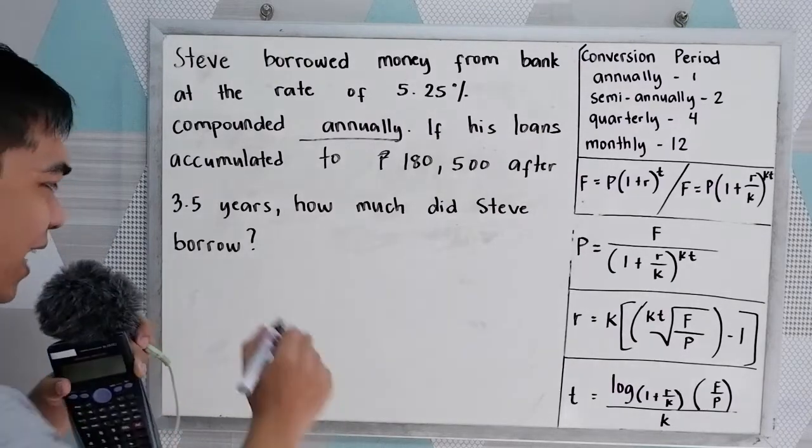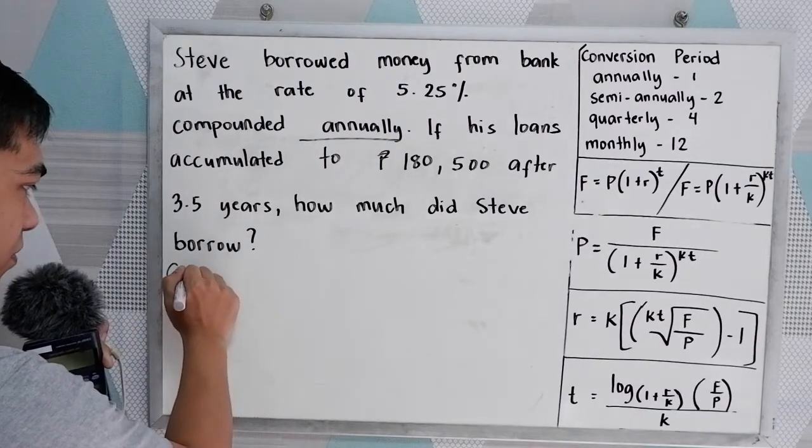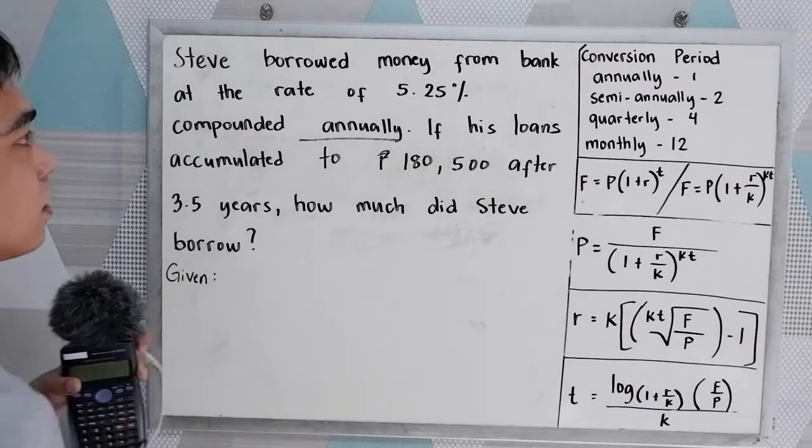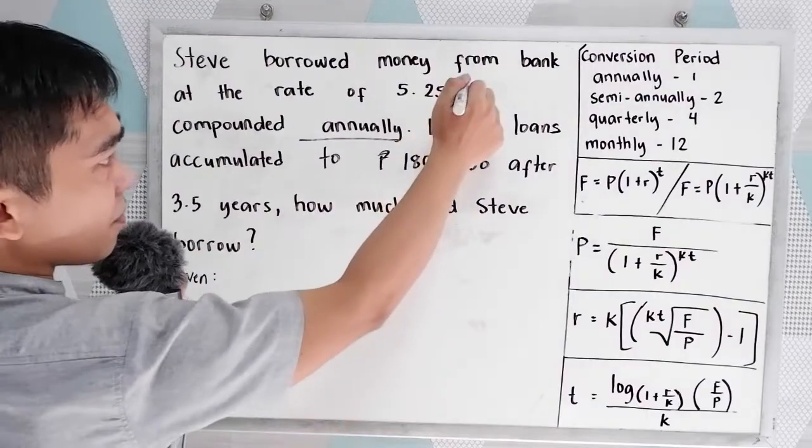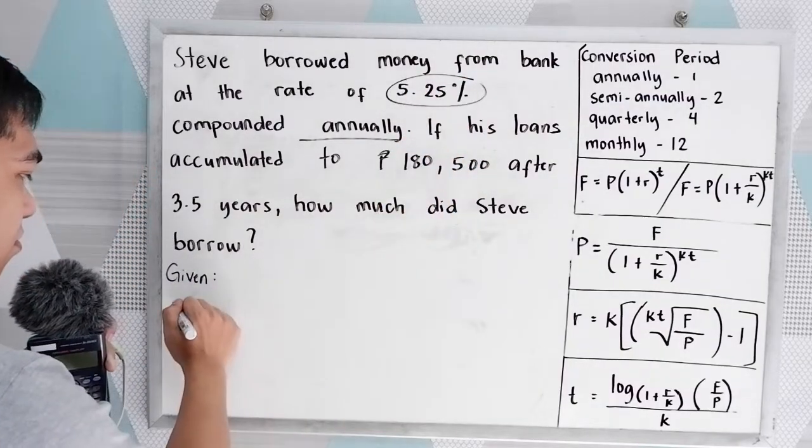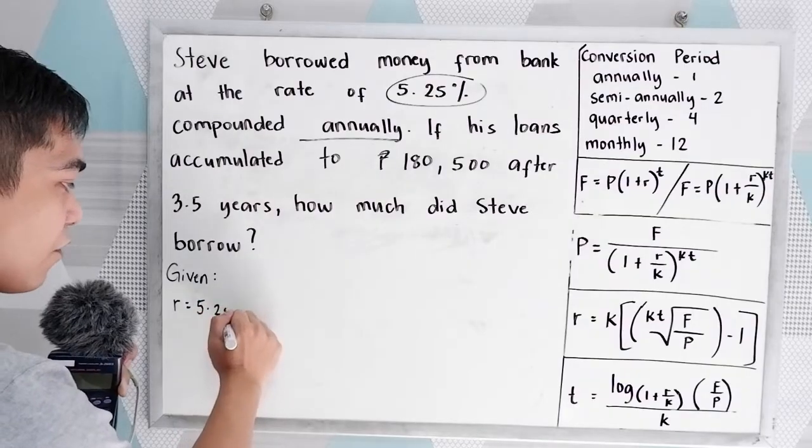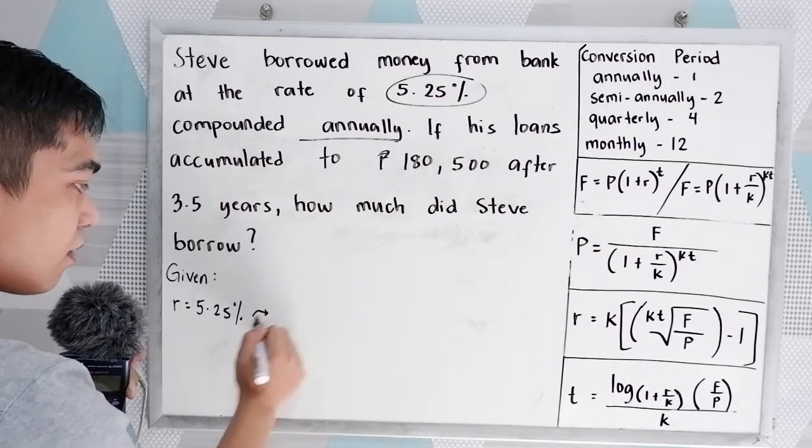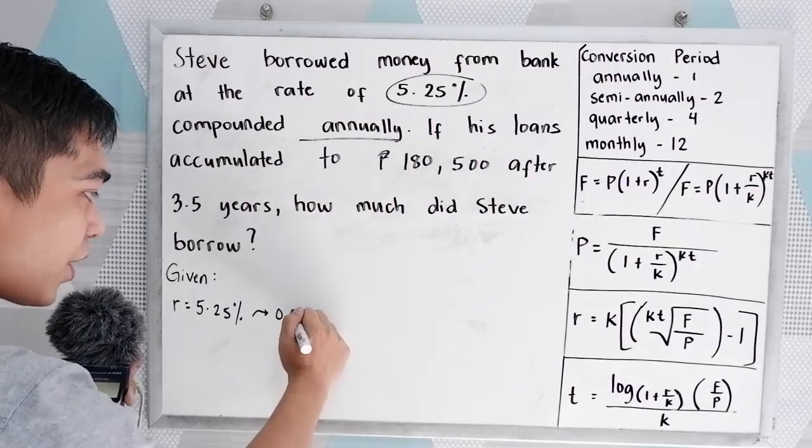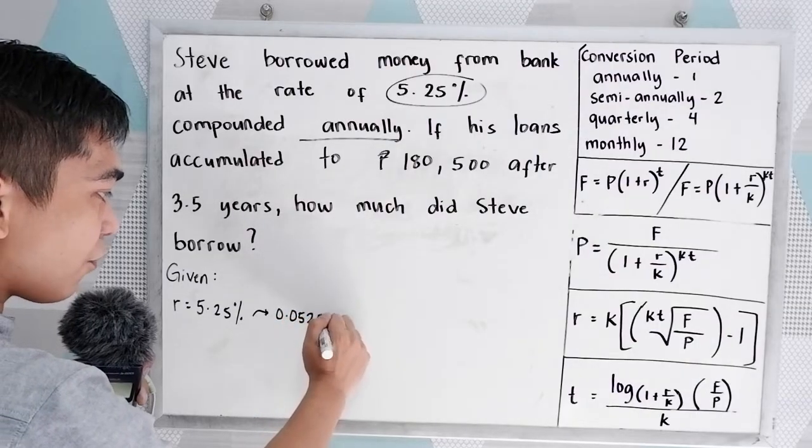So write all the given. We have first the rate, the R, 5.25%, that is 0.0525.